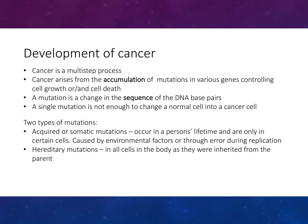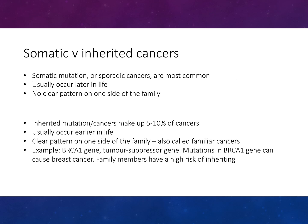Cancer is a multi-step process. It arises from the accumulation of mutations in various genes controlling cell growth and/or cell death. A mutation is a change in DNA sequence or base pairs, and a single mutation is not enough to change a normal cell into a cancer cell. There are two types: acquired or somatic mutations, which occur in a person's lifetime and are only in certain cells, caused by environmental factors or erroneous replication; and hereditary mutations, which are in all cells of the body as they were inherited from a parent.